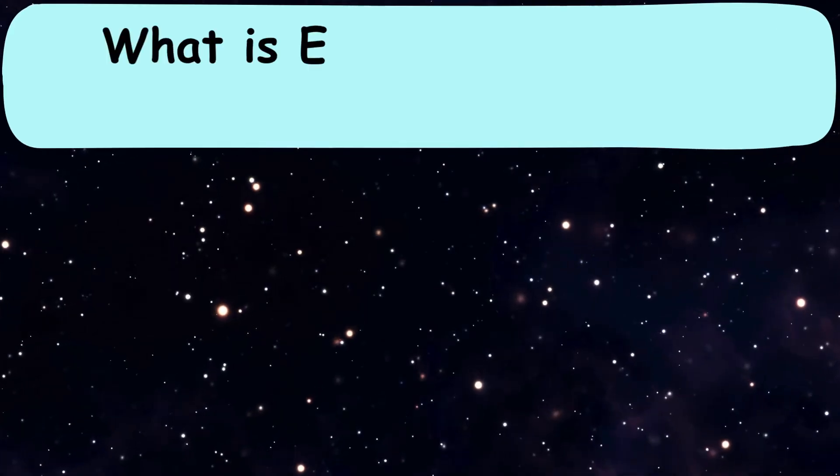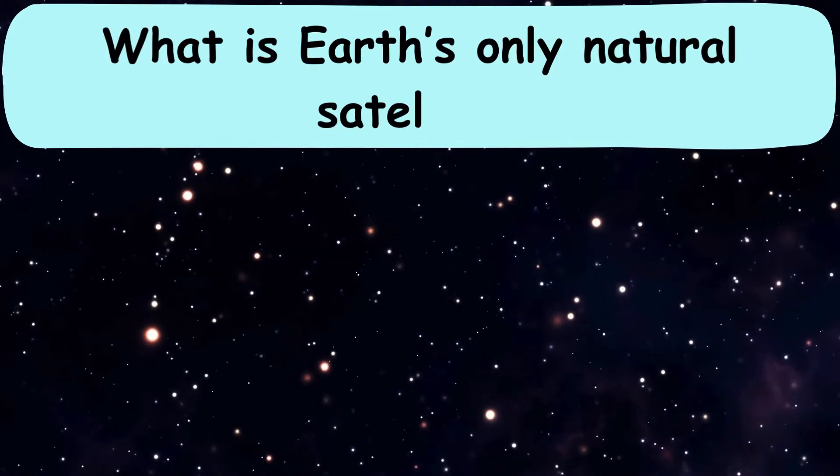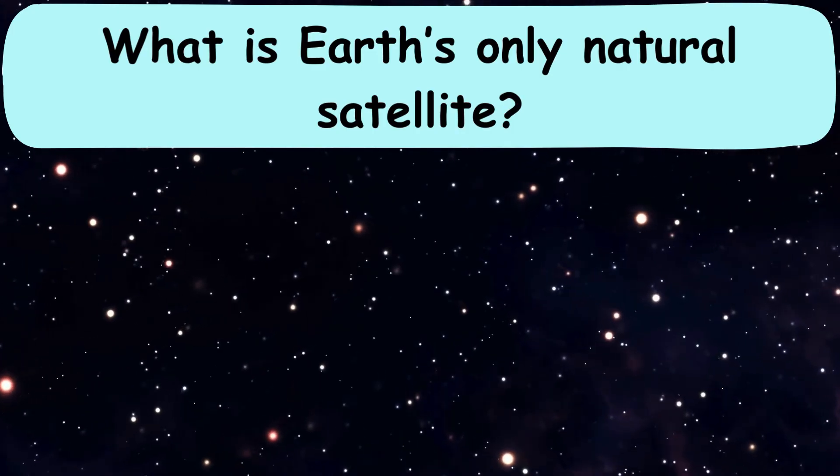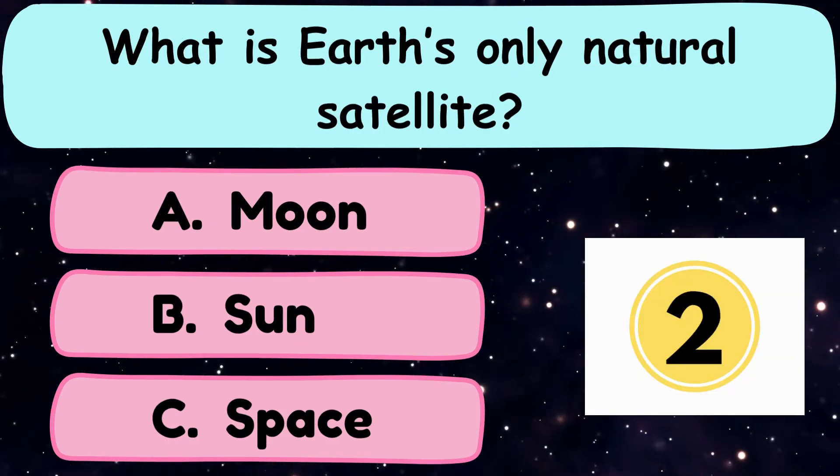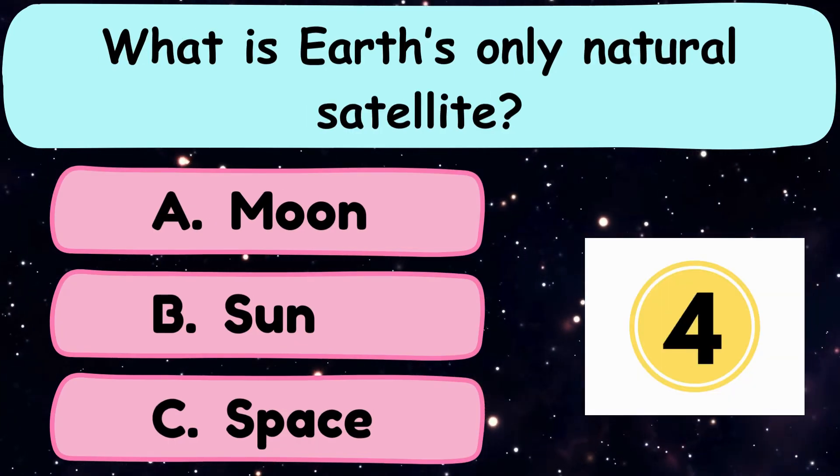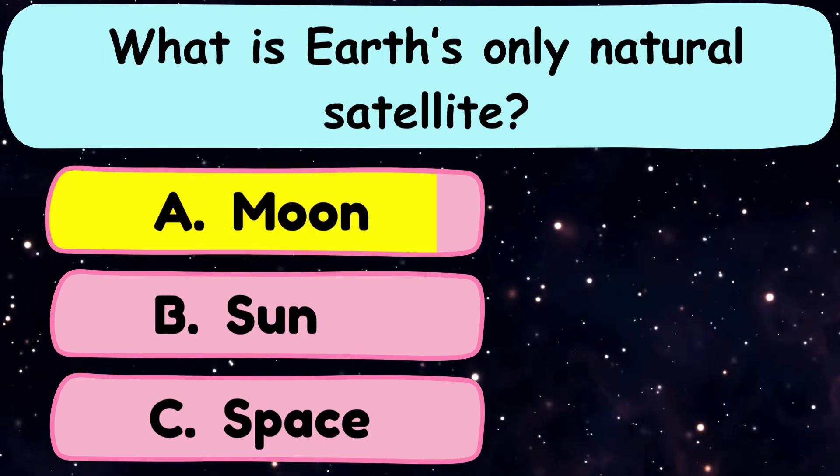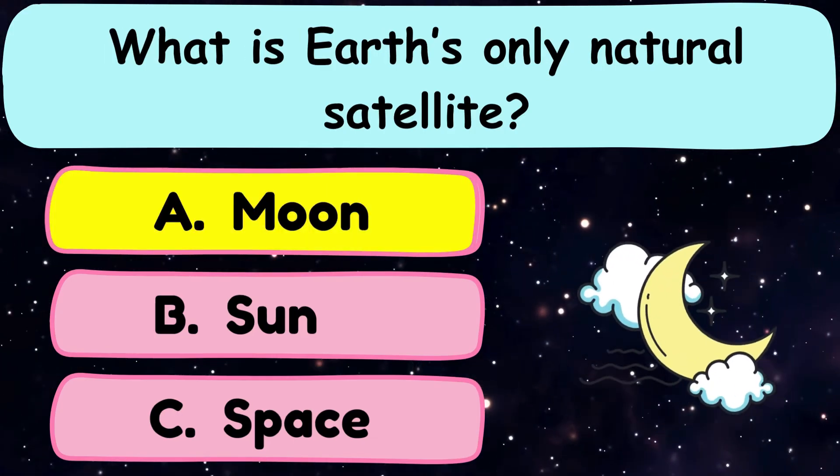Question number 27. What is Earth's only natural satellite? A. Moon, B. Sun, or C. Space? And the correct answer is option A. Moon.